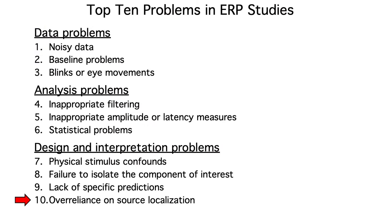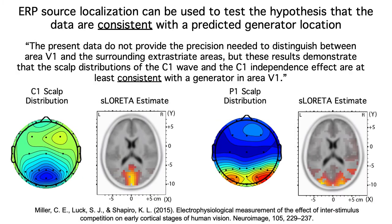The final problem I want to point to is over-reliance on ERP source localization. It's perfectly fine for a paper to include information about the plausible neural generator sources of their effects. They just need to be careful to say that the data are consistent with a particular generator source, rather than that the data demonstrate that a particular part of the brain is involved. If the researchers want to draw strong conclusions about the generator source, they would need to provide a principled quantification of the accuracy of the solution.